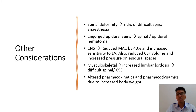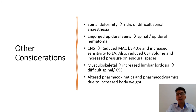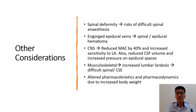Patients who undergo cesarean section should be carefully evaluated for any spinal deformity, because this will risk difficult spinal or epidural anesthesia. The mother will have engorged epidural veins at the back because of the gravid uterus, so there will be a risk of spinal epidural hematoma should we attempt spinal anesthesia. As mentioned earlier, in the central nervous system there will be a reduction in the minimal alveolar concentration, MAC, by about 40% in mothers who undergo general anesthesia.